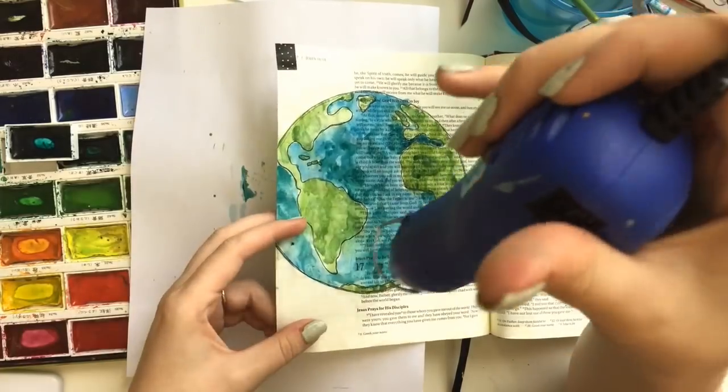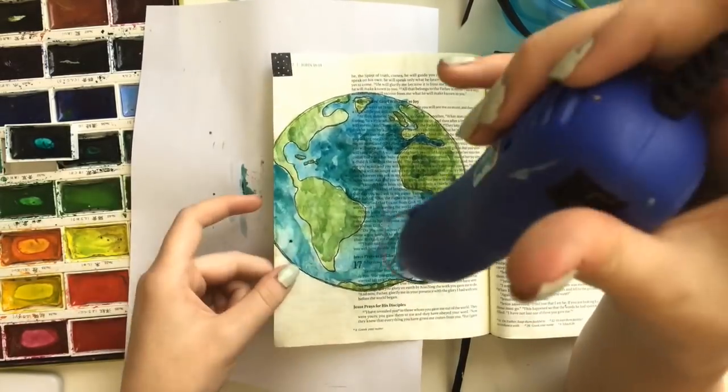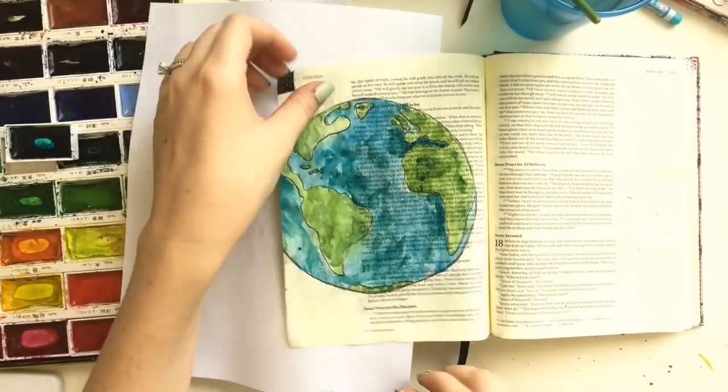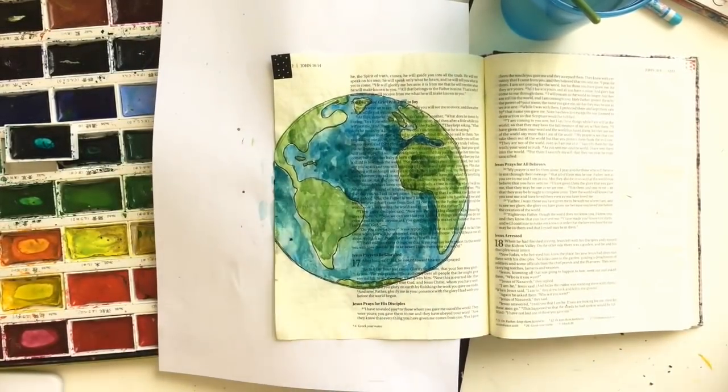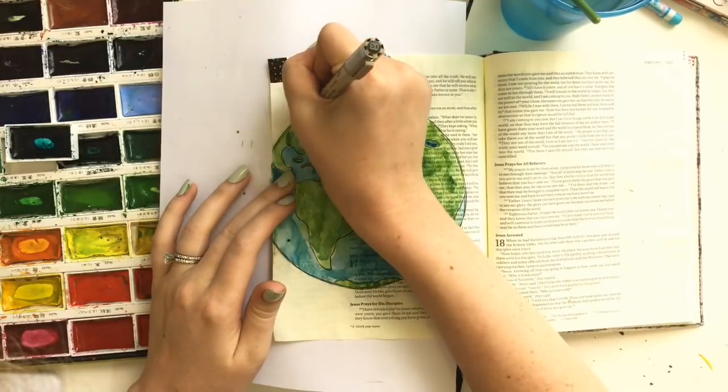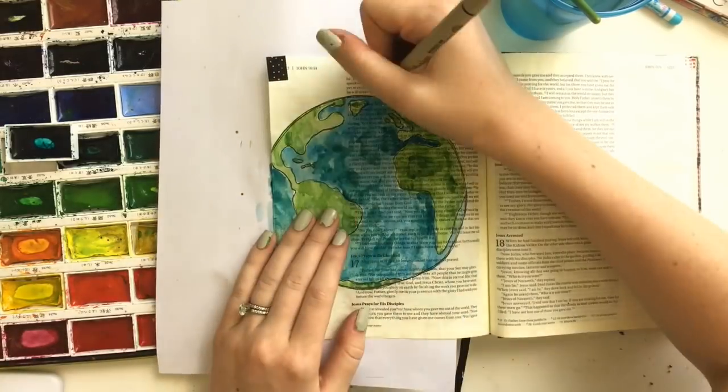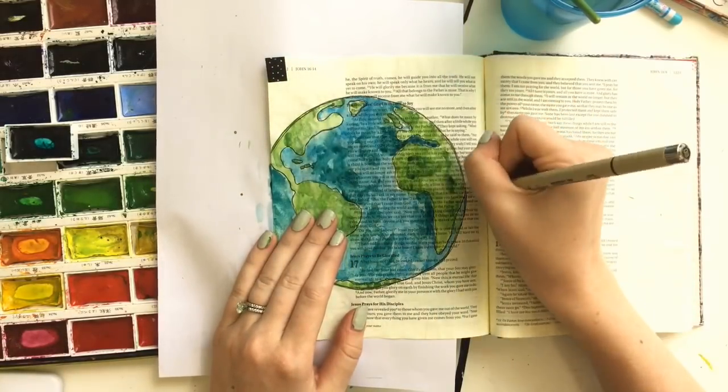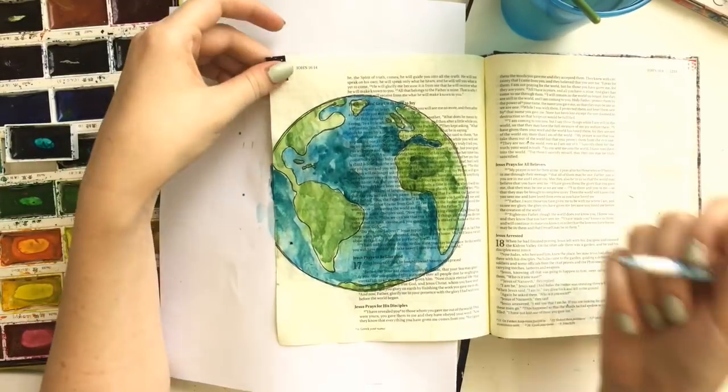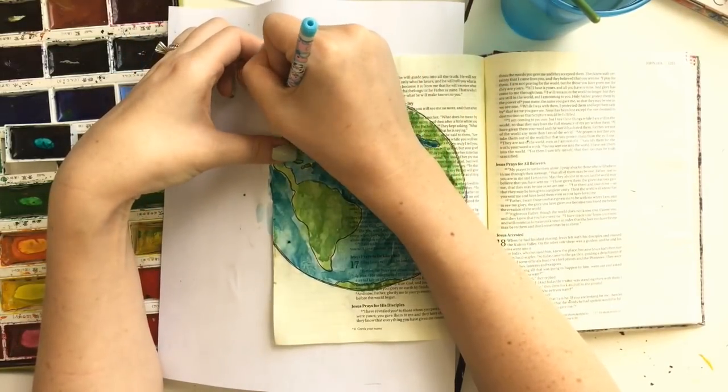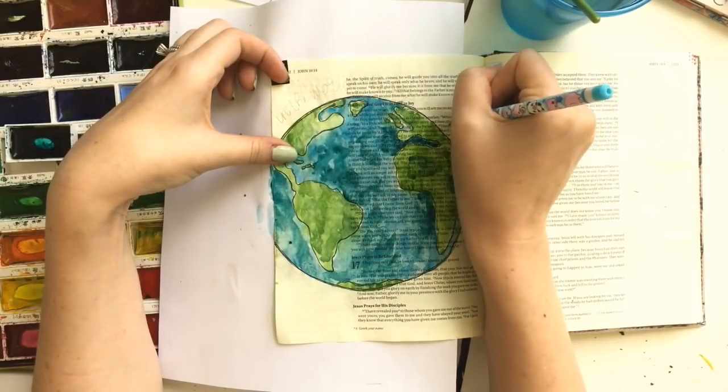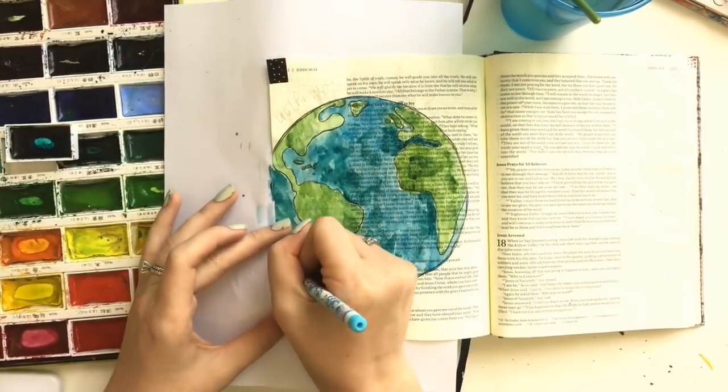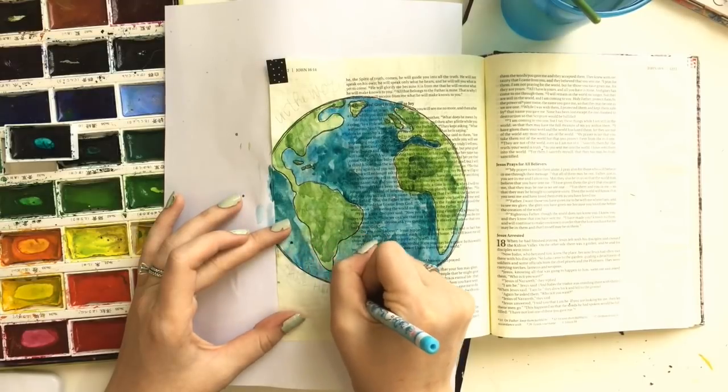So I can still read the scripture underneath my art here, and especially if I were to use lighter colors and I would very easily be able to read it. But again, I didn't mind too much on the, I have a few little dark blotches that it makes it a lot harder to read, but that's okay with me because I have other Bibles that I read from and that's a personal choice. So have fun with it.